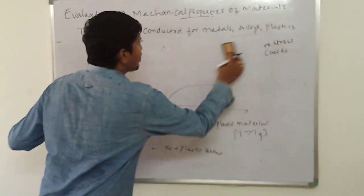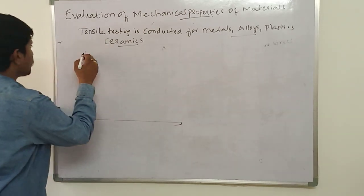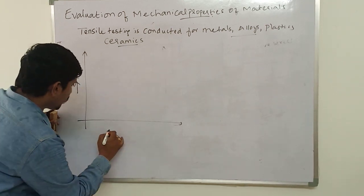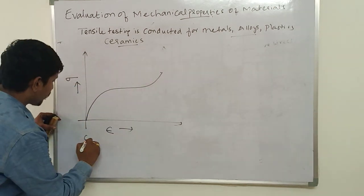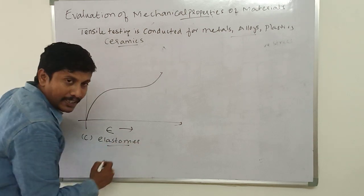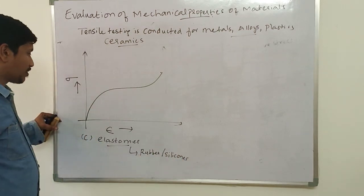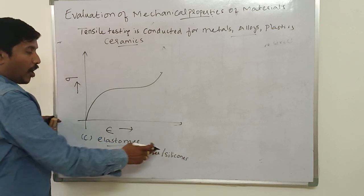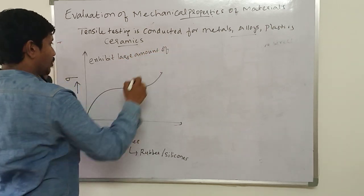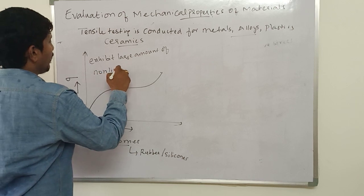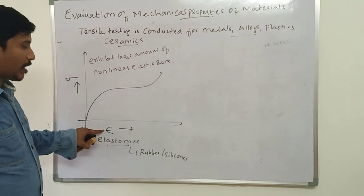If you plot the typical stress-strain curve for an elastomer like rubber, with stress on the y-axis and strain on the x-axis, elastomers like rubber and silicones exhibit a large amount of nonlinear elastic zone.